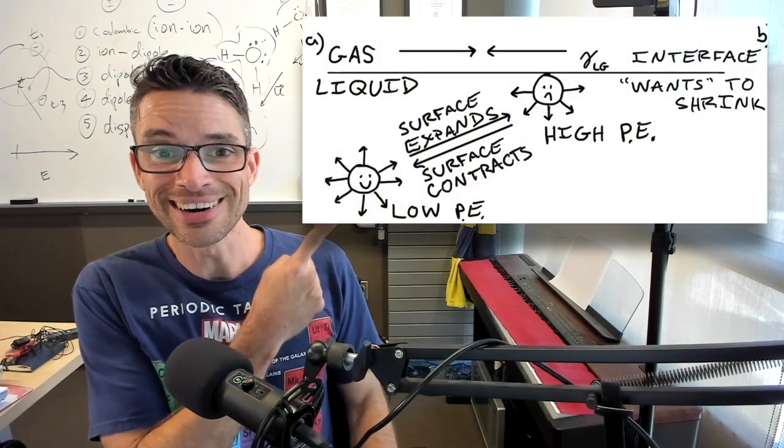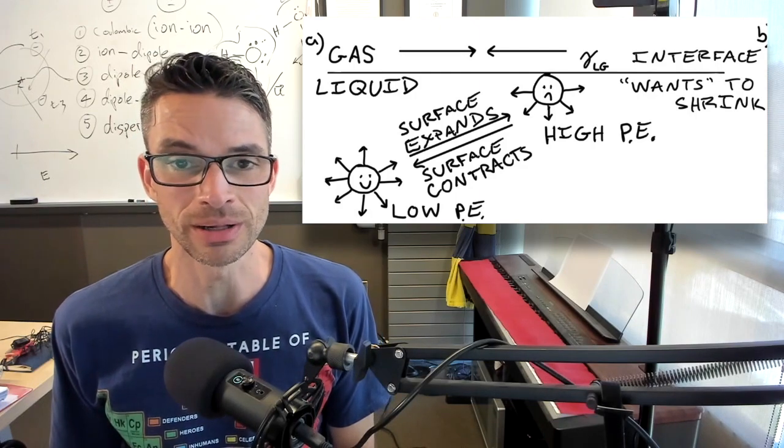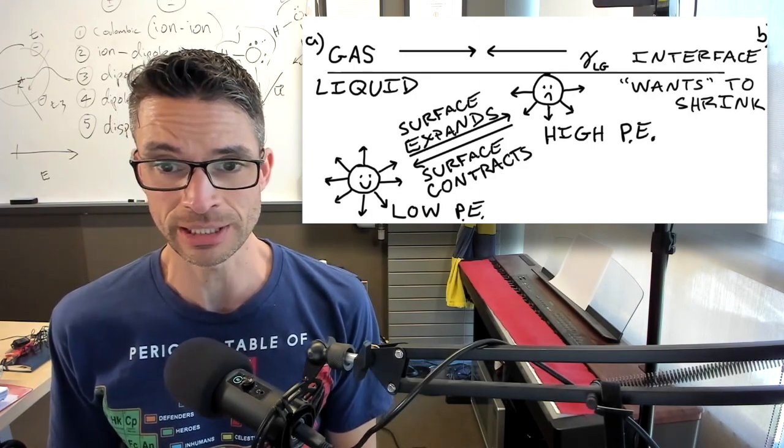Now, why is that bad? Well, let's take a look at this figure right here. And what we see here is a happy molecule in the bulk. The bulk means, remember, away from the surface.